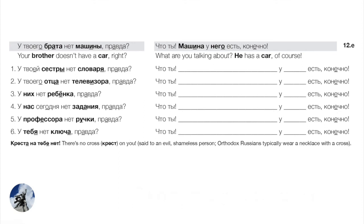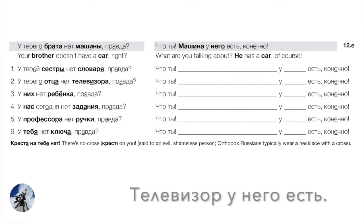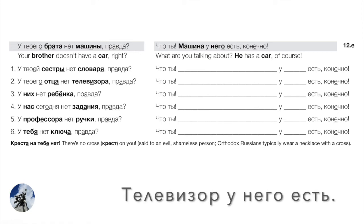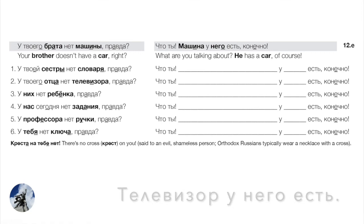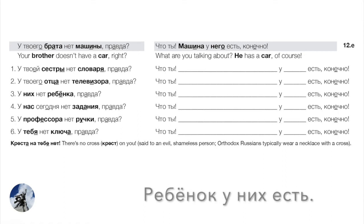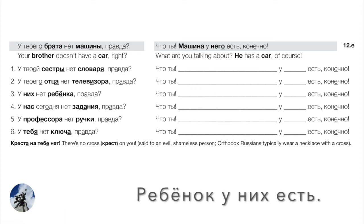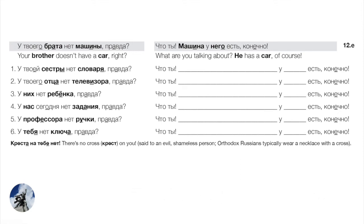Number two: У твоего отца нет телевизора, правда? — Что ты? Телевизор у него есть, конечно — back to the nominative телевизор. Number three: У них нет ребёнка, правда? — Что ты? Ребёнок у них есть, конечно. Remember ребёнок has a mobile vowel — going from ребёнка back to the nominative ребёнок.